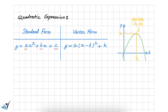Whereas in the standard form, you need to spend some time and do some calculation to obtain the coordinates of the vertex. In the vertex form, X is still the variable and the constants are A, H, and K. A is the same as the A in the standard form, but H and K are new constants in the vertex form. However, there is a relationship between H and K in the vertex form and A, B, and C in the standard form.